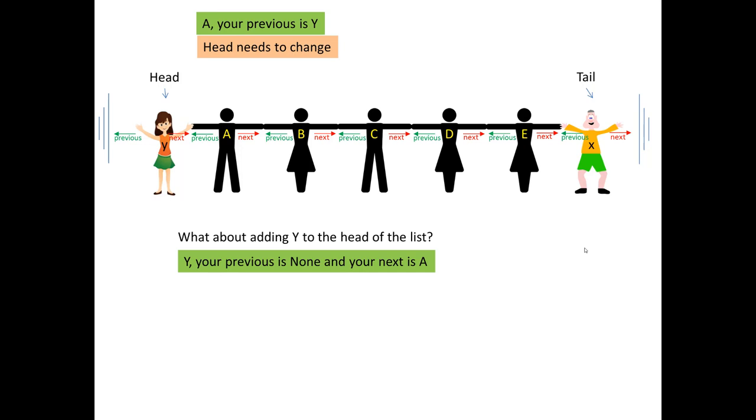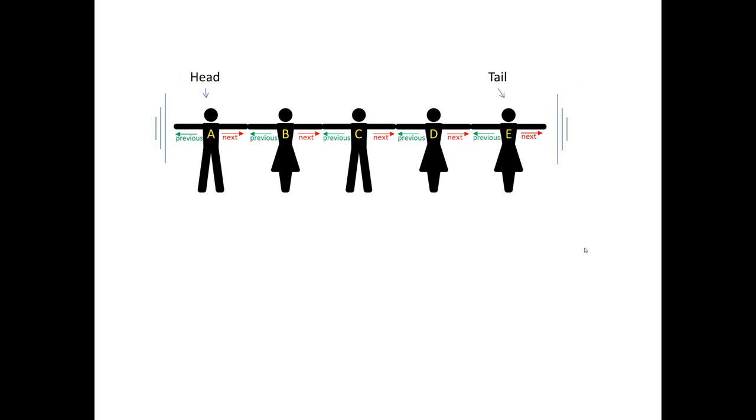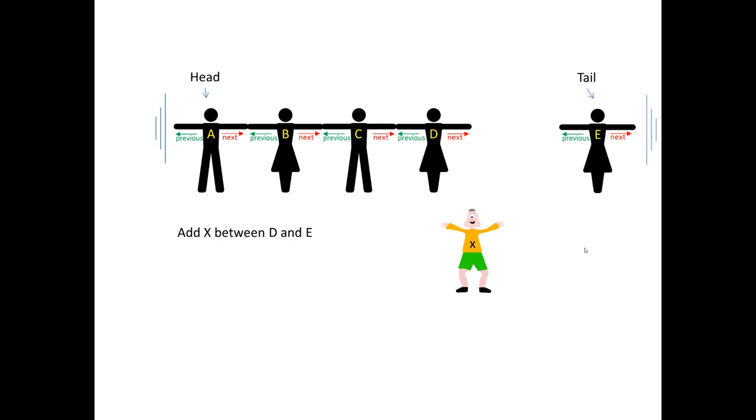But how do I do that if I want to add in the middle? OK, so now I have another doubly linked list and I want to add, for example, X, but in between D and E. OK, so not really at the end and not really in the beginning. So in this way, I will just ask X, hey, your next, you're new here and your next will be E. OK. And your previous is actually D. OK.